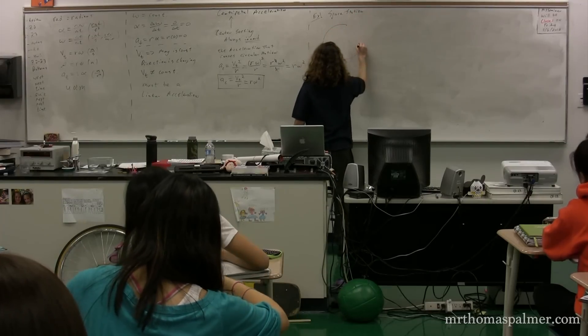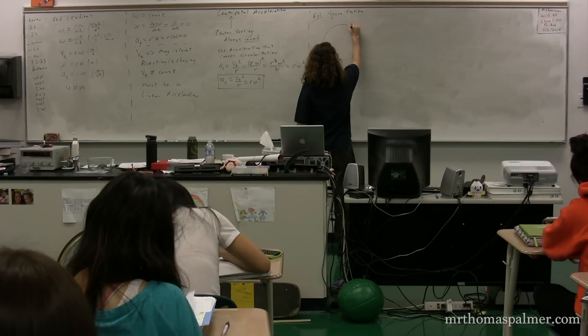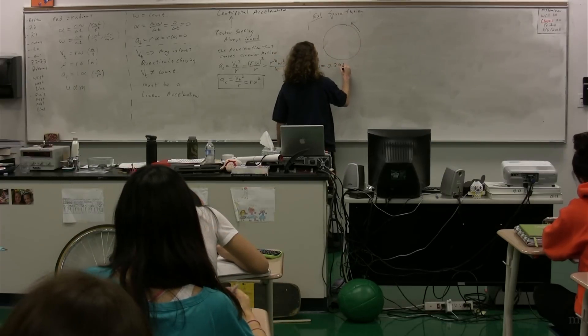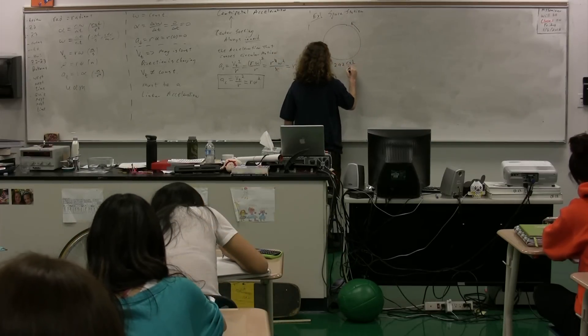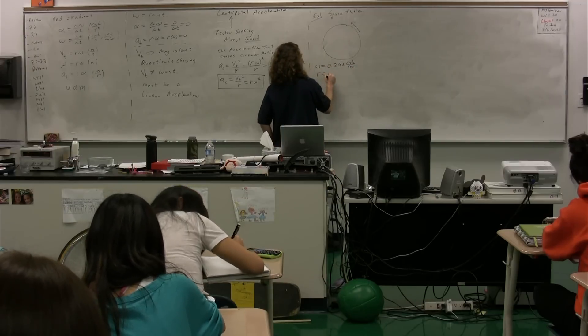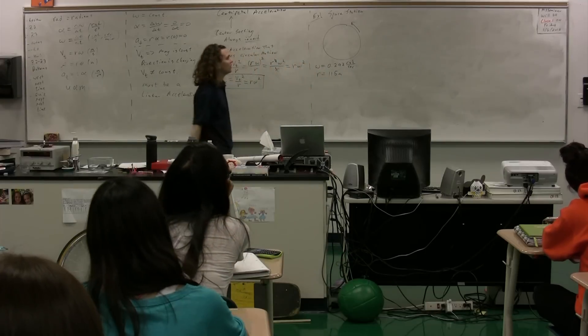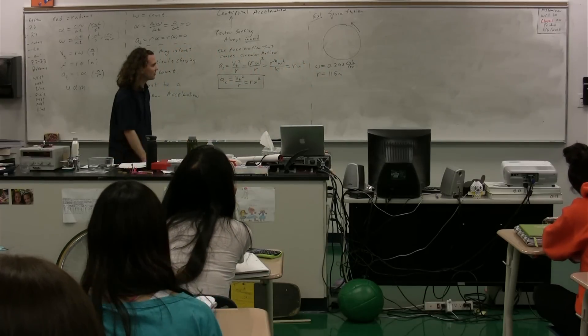So we have a space station that looks like this, and it is rotating at some constant angular velocity of 0.292 radians per second, and the radius is 115 meters. So the total radius of the space station is 115 meters.